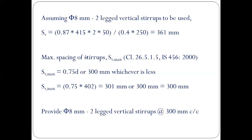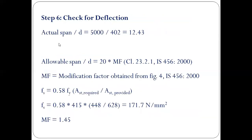Since sv = 361 mm exceeds 300 mm, we check the maximum spacing of stirrups per Clause 26.5.1.5: maximum spacing = 0.75d or 300 mm, whichever is less. 0.75 × 402 = 301.5 mm, so the maximum spacing is 300 mm. Provide 8 mm two-legged vertical stirrups at 300 mm center to center.